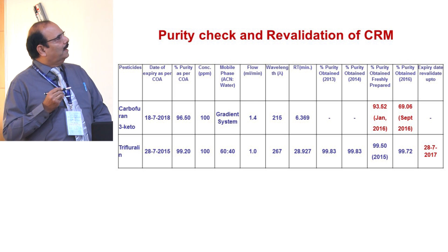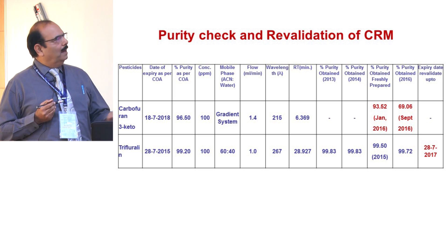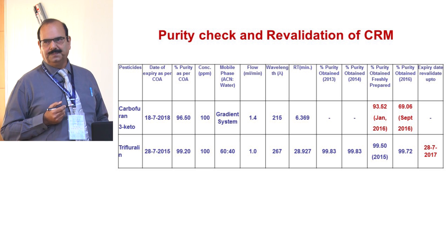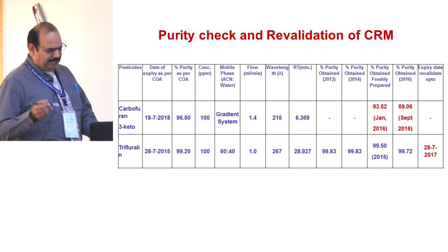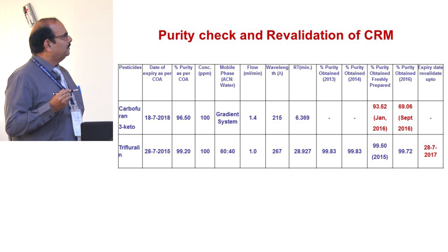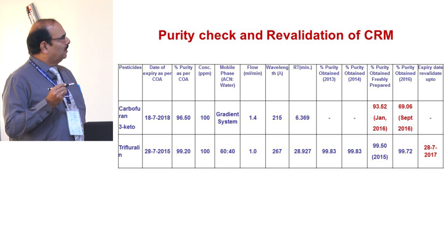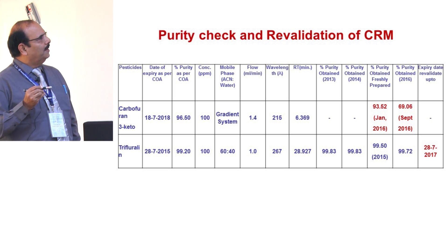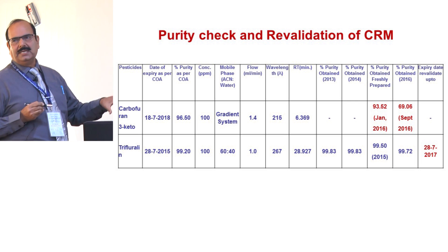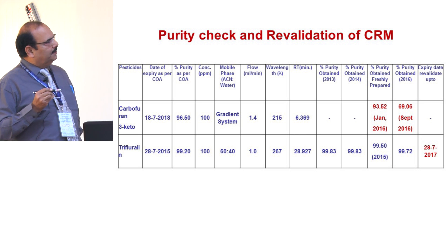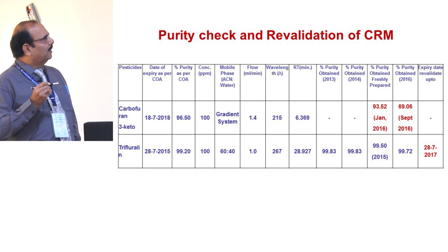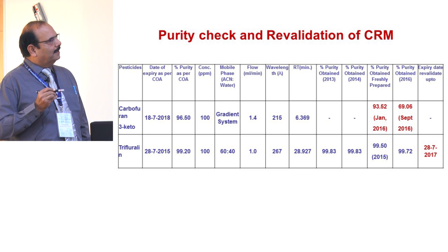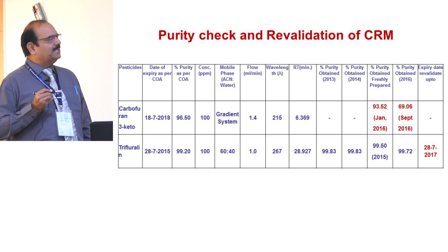So the question is: the certificate of analysis shows trifluraline has already expired as of 2015, but purity checks in 2013, 2014, 2015, and 2016 all show the same purity. Will you use it or discard it? You can revalidate the expiry, but you must satisfy the audit team. In the SENCO or center documents it is mentioned you can use up to six, eight, or ten years, but you must have all records — soft and hard copy — showing the purity checks.